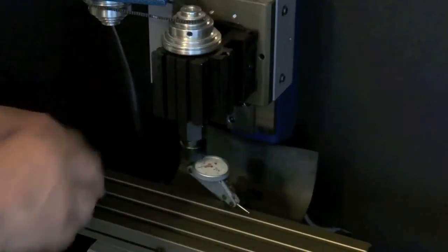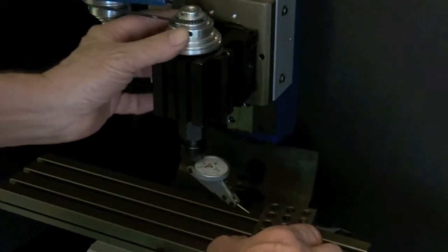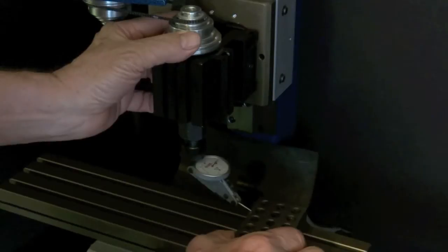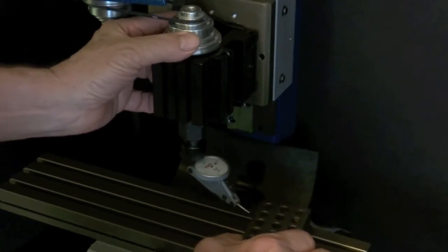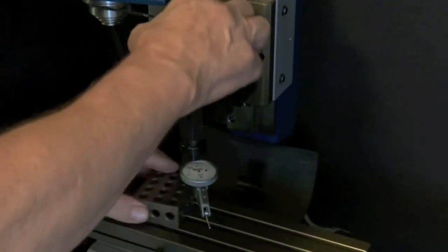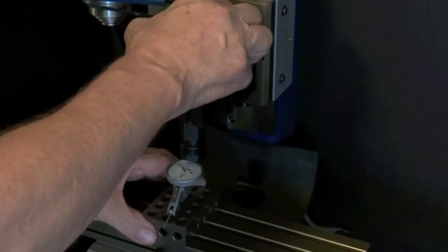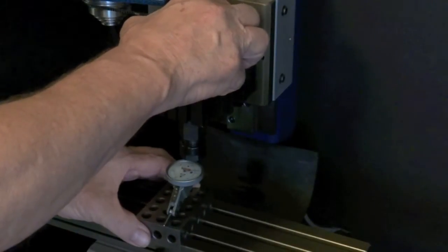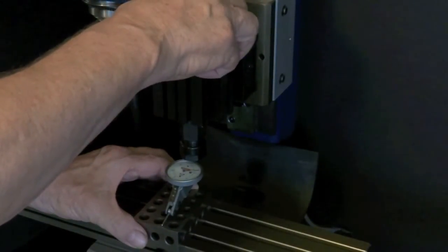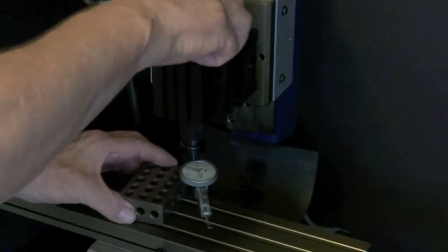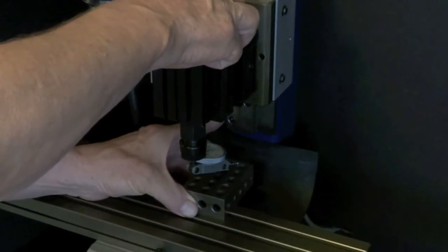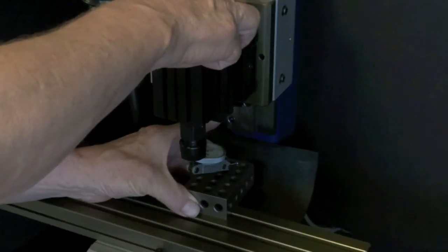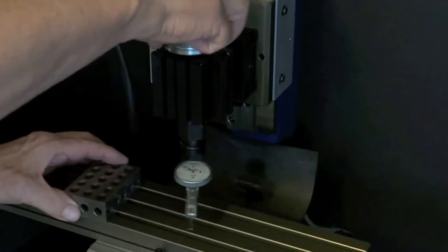I'm using a 1-2-3 block here, something that you have at home. And we can zero this out. We're about half a thousandth out in the front here, and about the same in the back, half a thousandth. I could live with that.